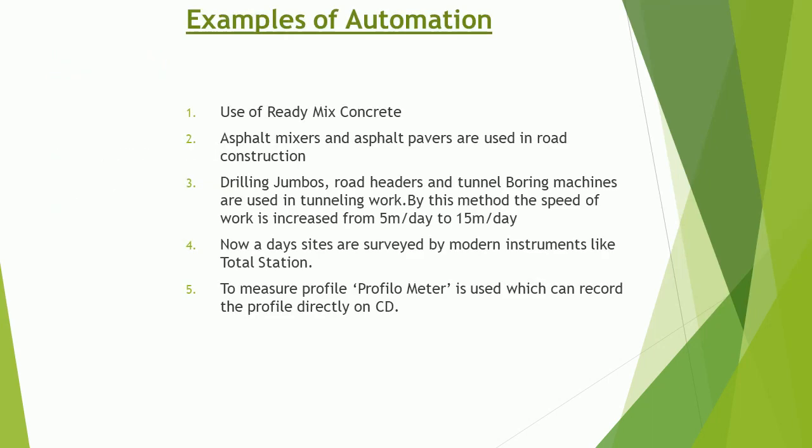Examples of automation include: use of ready mix concrete; asphalt mixers and asphalt pavers used in road construction; drilling jumbos, road headers, and tunnel boring machines used in tunneling work. By this method, the speed of work is increased from 5 m/day to 15 m/day.